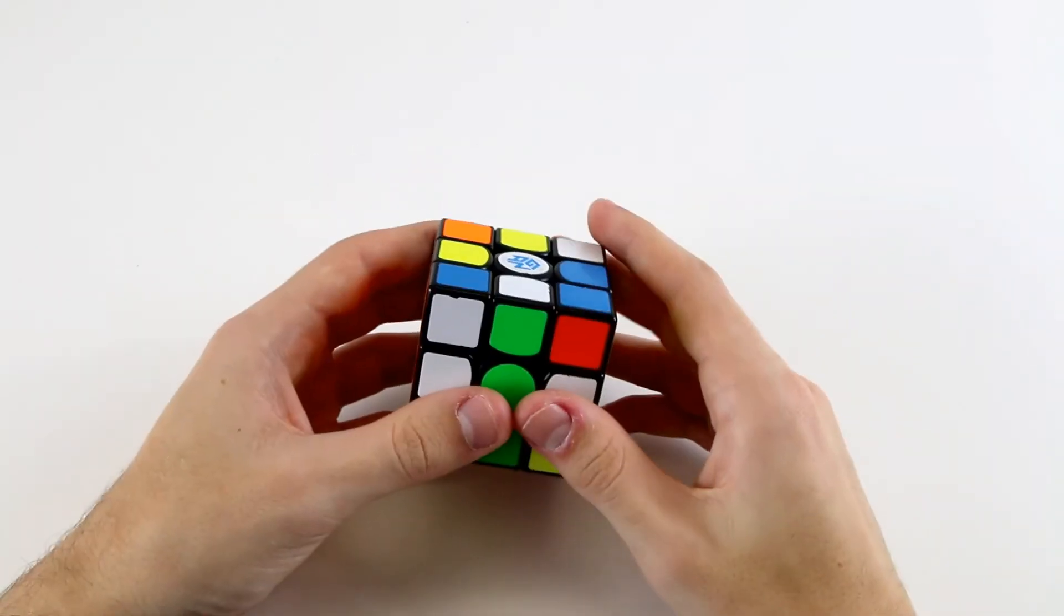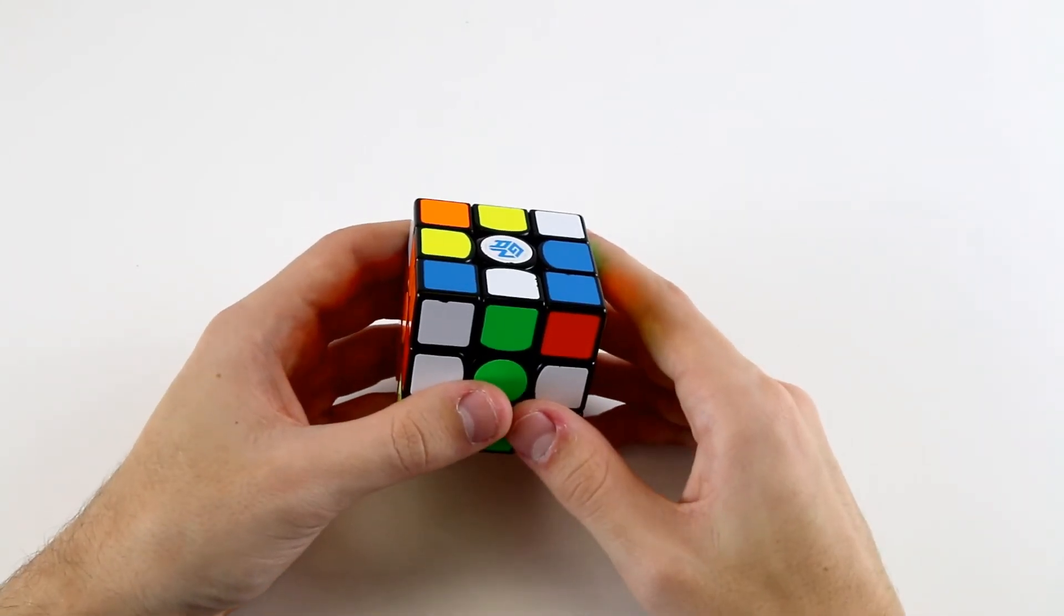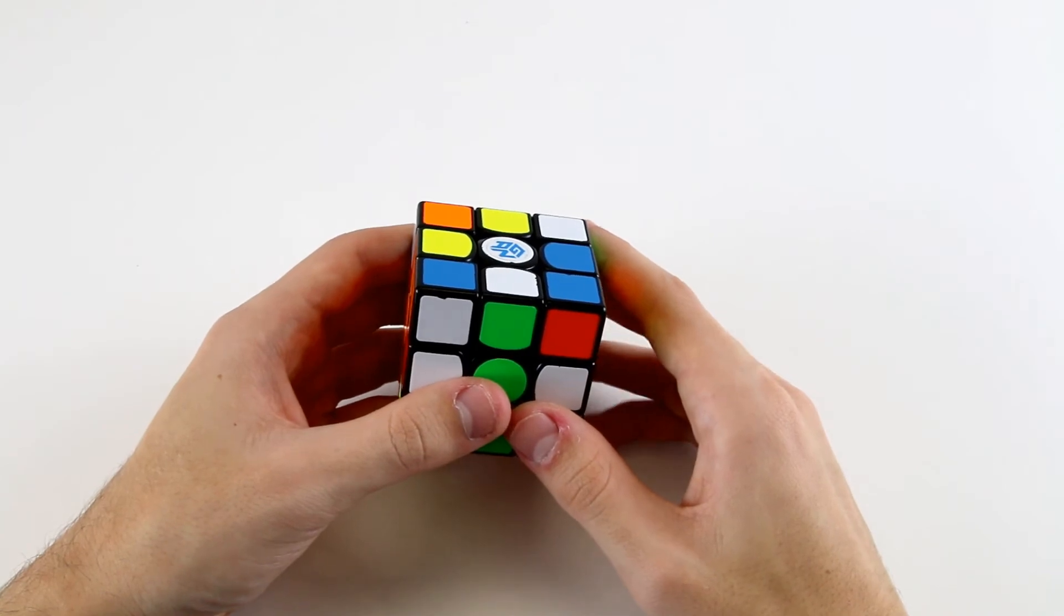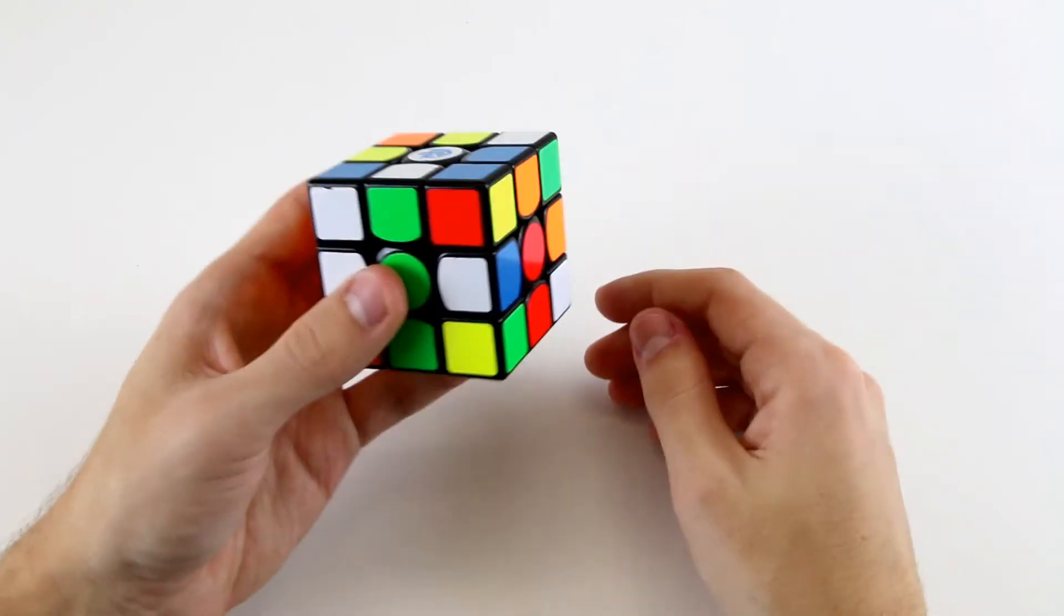With regard to your last layer, the key difference is just in the algorithms and finger tricks that you use. But as I'll discuss later on, we can also slightly adjust our solving approaches sometimes to force cases that are easier to execute with one hand.